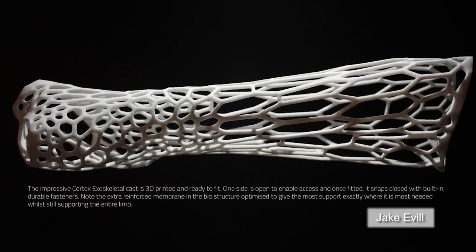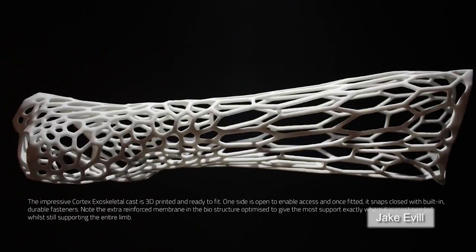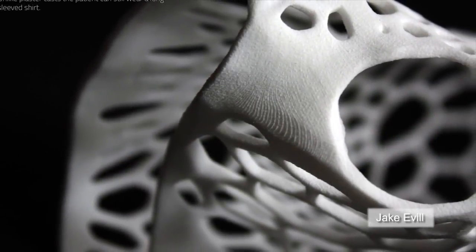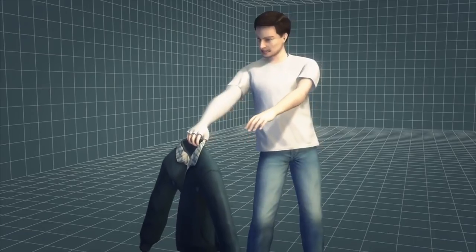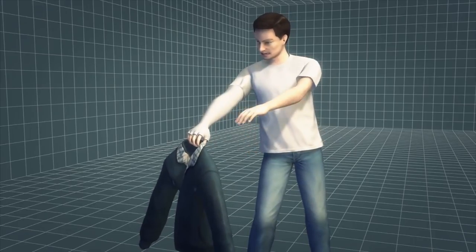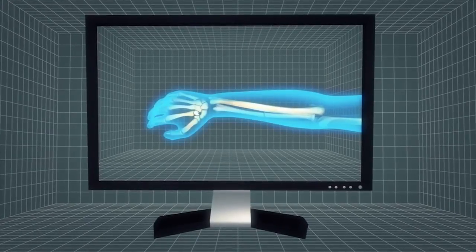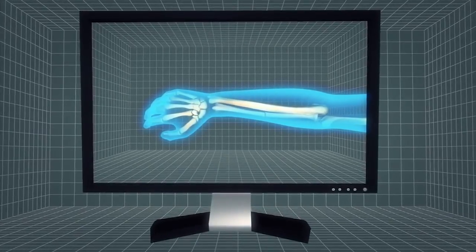A 3D printed plastic cast dubbed the Cortex Exoskeleton is a finalist for the 2013 James Dyson Award. Traditional orthopedic casts are bulky and inconvenient. X-ray scans of the breaks in the bone allow the Cortex Exoskeleton to be printed to fit exactly over the affected limb.